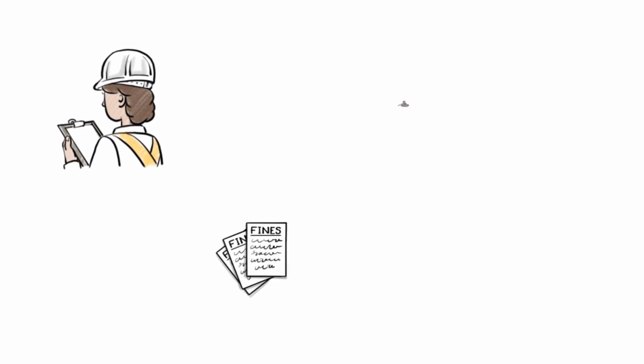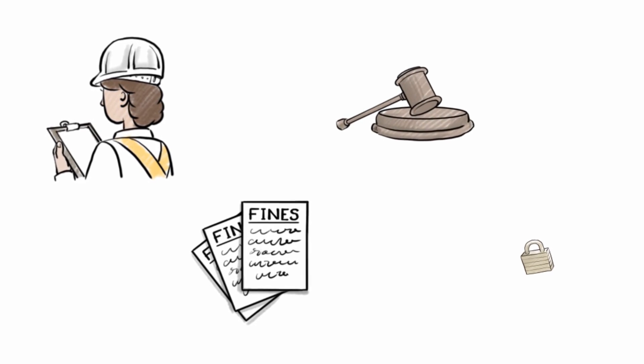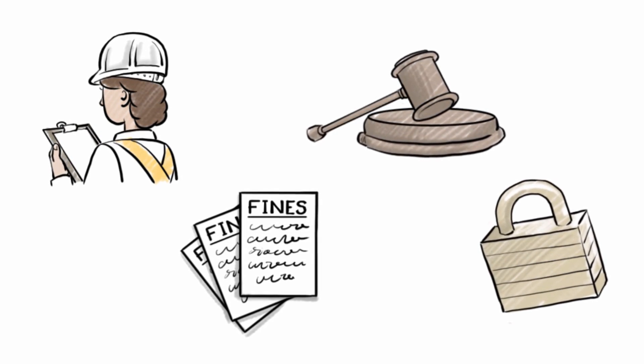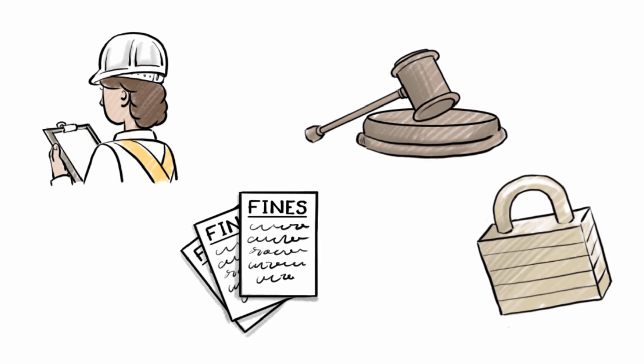If problems are found, the AER takes action to enforce the rules in a variety of ways. Consequences for breaking them can be very serious and include conducting more frequent inspections, issuing large fines, carrying out prosecutions, or even shutting in operations.